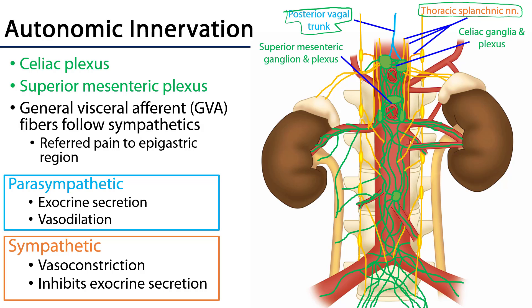Parasympathetic stimulation — rest and digest — leads to exocrine secretion and vasodilation, resulting in an active pancreas. Sympathetic stimulation leads to vasoconstriction and inhibition of exocrine secretion. General visceral afferent fibers that conduct visceral pain follow sympathetic fibers here, so referred pain from the pancreas is to the epigastric region.